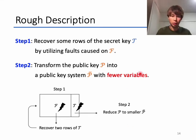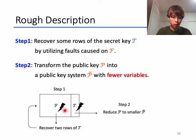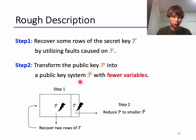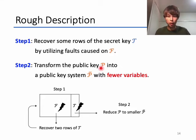This is the rough description of our proposed attack. In step one, we recover some rows of the secret key T by utilizing faults caused on the central map F. If a fault is caused on F, we recover two rows of T and cause another fault. If a fault is caused on the linear map T instead, we go to step two. In step two, we transform the public key P into a smaller public key system P-bar with fewer variables, and execute existing attacks on UOV on this resulting system more efficiently.